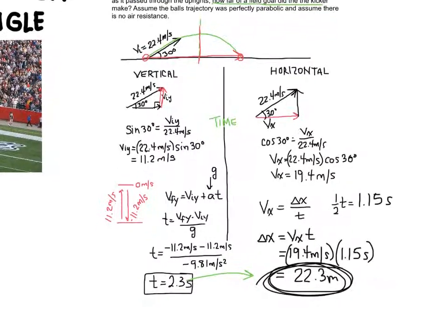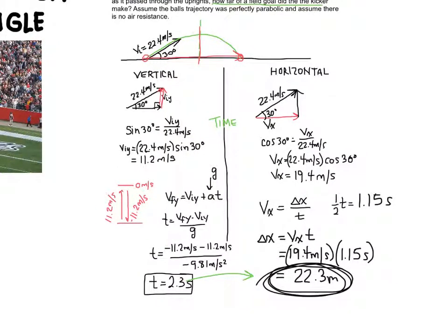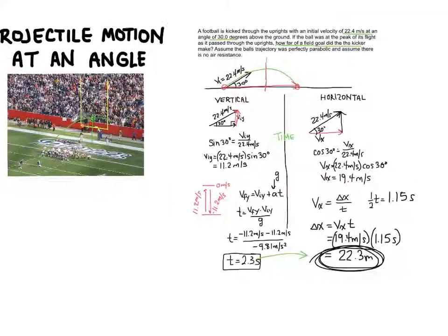To recap: when solving projectile motion at an angle, separate the vertical and horizontal components. Start with the vertical component — use sine of 30 degrees to find the upward velocity. The key is to find time using the first equation of motion. That time transfers over to the horizontal component, where cosine gives you v_x. You then find the distance traveled in the x direction using that time. That is projectile motion at an angle.